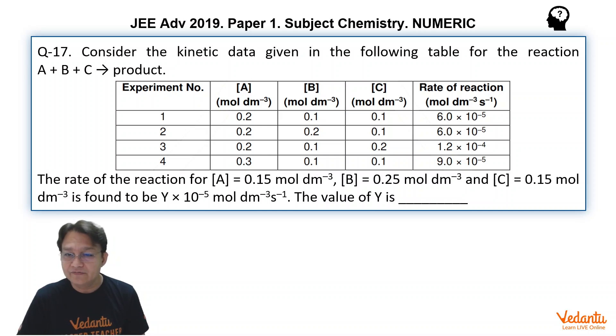The rate becomes 6 into 10 to the power of 5, to 9 into 10 to the power of minus 5. So simply, we can see that 0.2 to 0.3 and 6 to 9, which means it is following the first-order process with respect to A.